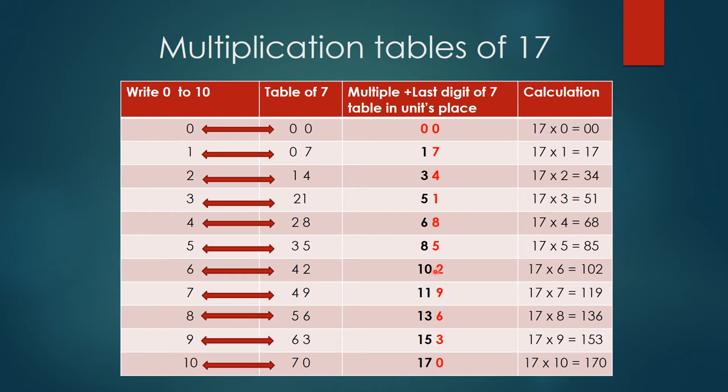So suppose you want to calculate what is 17×9. So you know 7×9 is 63. So you write 3, and 6 plus 9. This is the ninth multiple. Ninth multiple plus the tens place of your ninth multiple of 7. That simple it is. So 15, so it will be 153. So this way you have to learn.